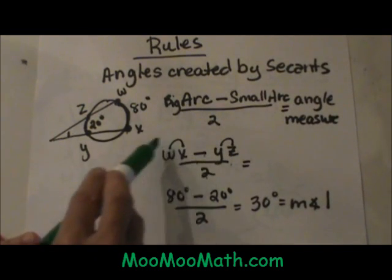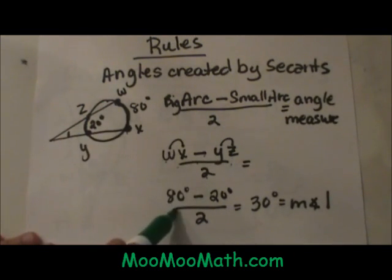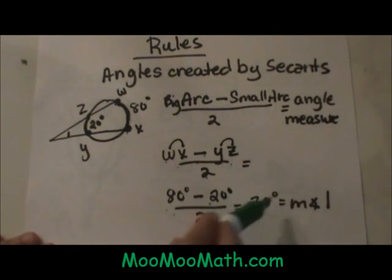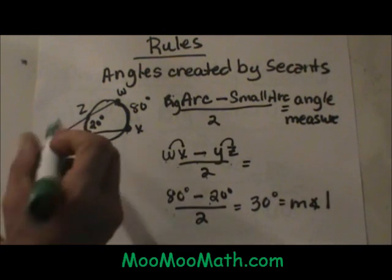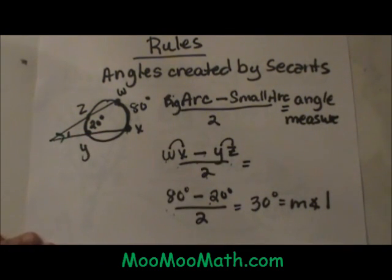Let us plug in the numbers. So I have replaced WX with 80 minus 20 and divide by two. So 80 minus 20 is 60. Divide by two. So angle one out here is indeed 30 degrees.